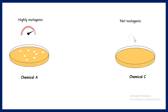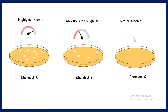In contrast to chemical A, if we look at chemical C, we cannot see colonies on the plate. That means this chemical was not able to reverse the mutation in the histidine gene, and so histidine cannot be synthesized and the bacteria eventually die. Compared to these two, chemical B is moderately mutagenic — we can see quite a few colonies, more than chemical C but fewer than chemical A.